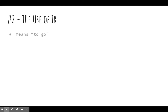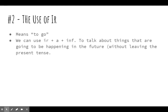The use of ir — it means to go, and we can use it in the construction ir plus a plus infinitive, and we use this to talk about things that are going to happen in the future, without leaving the present tense.